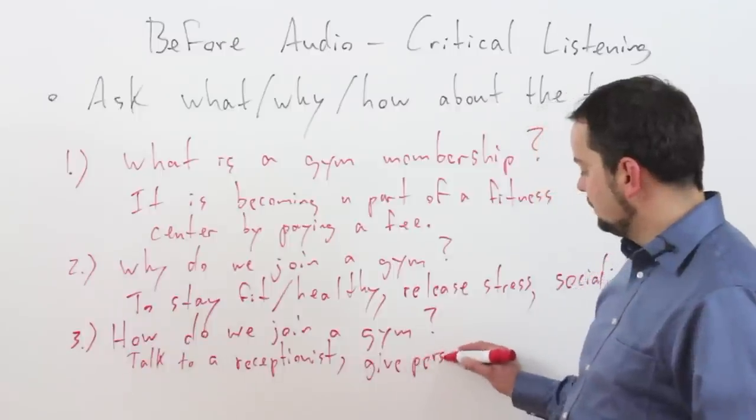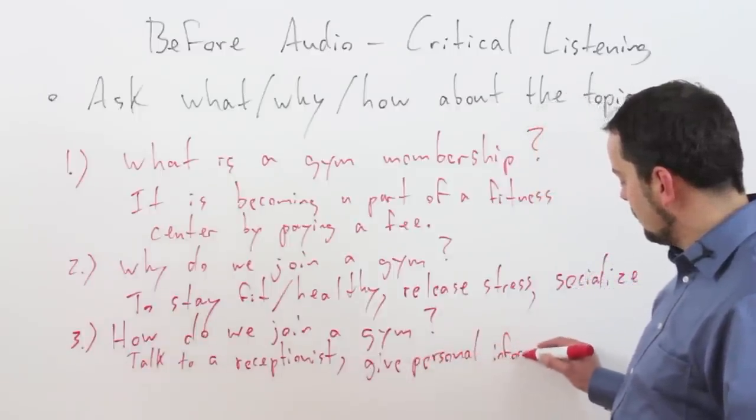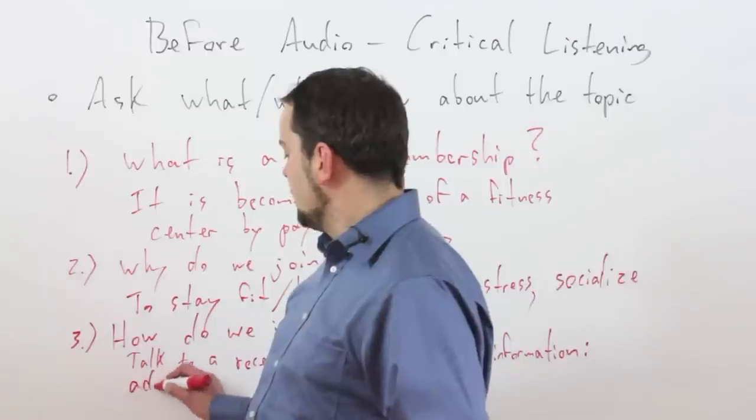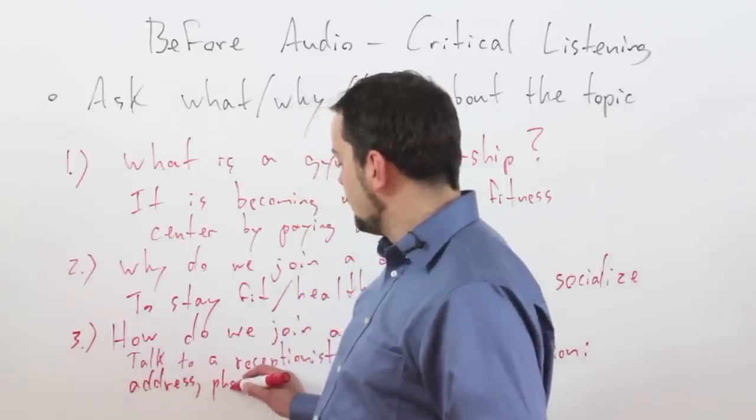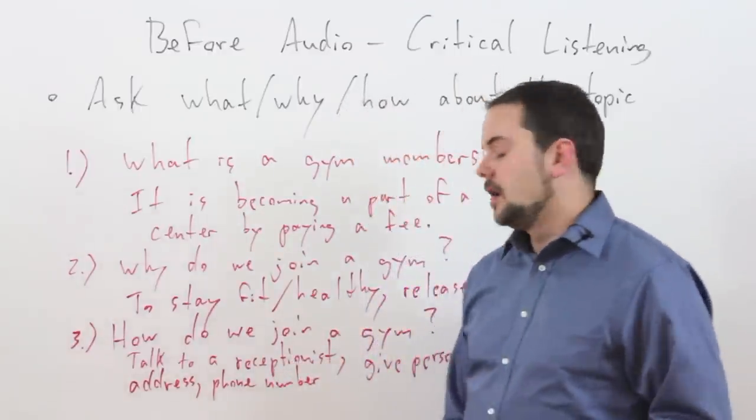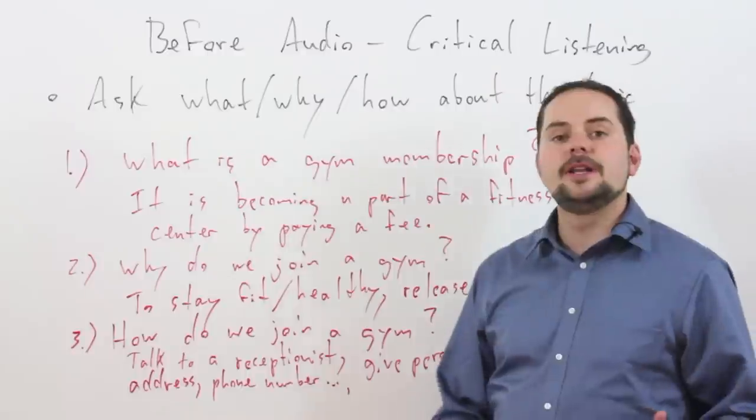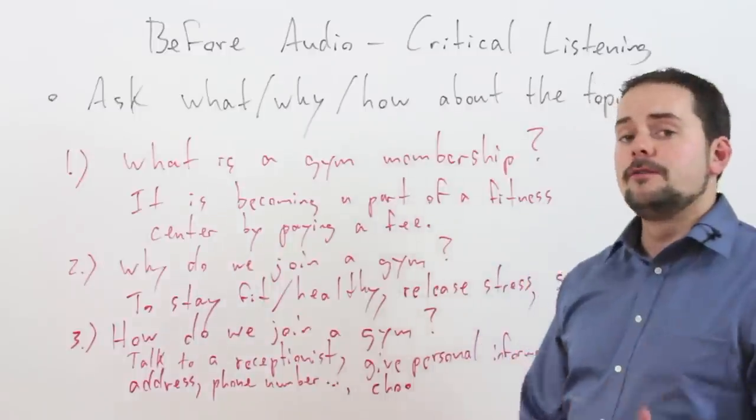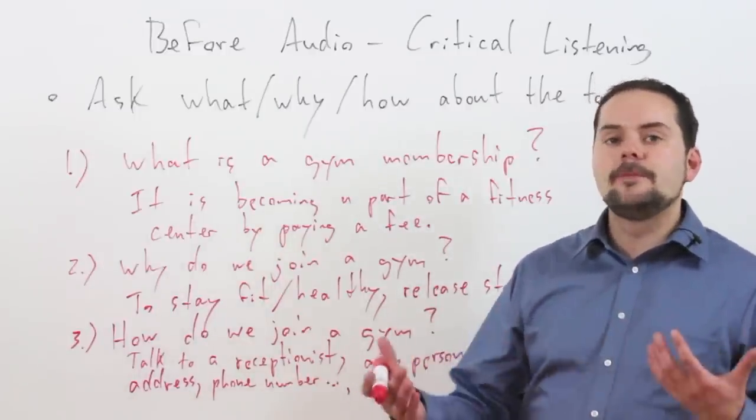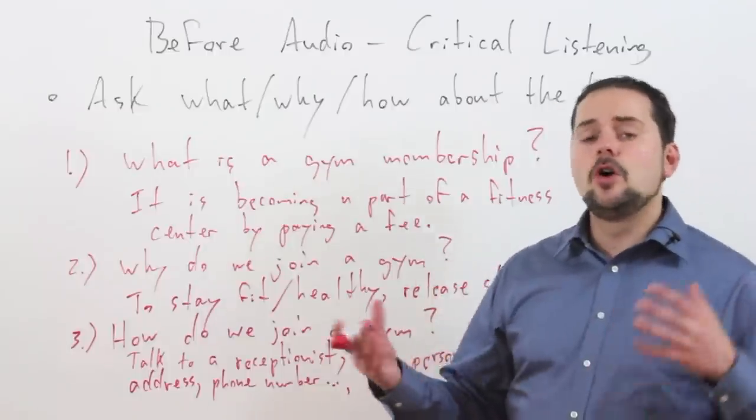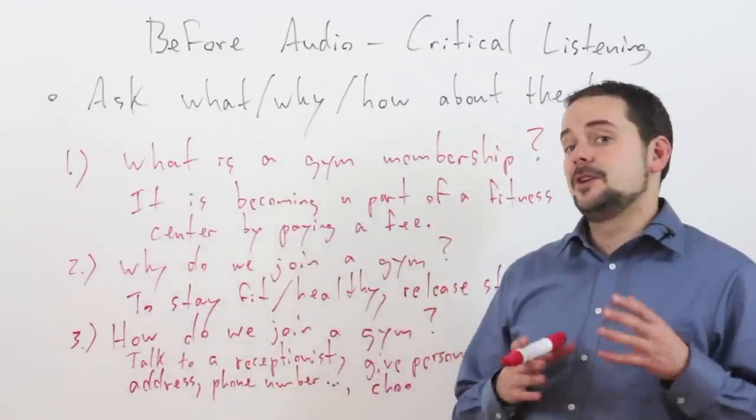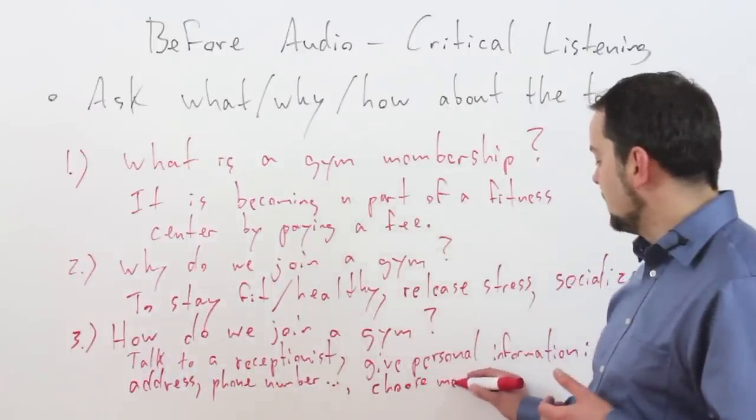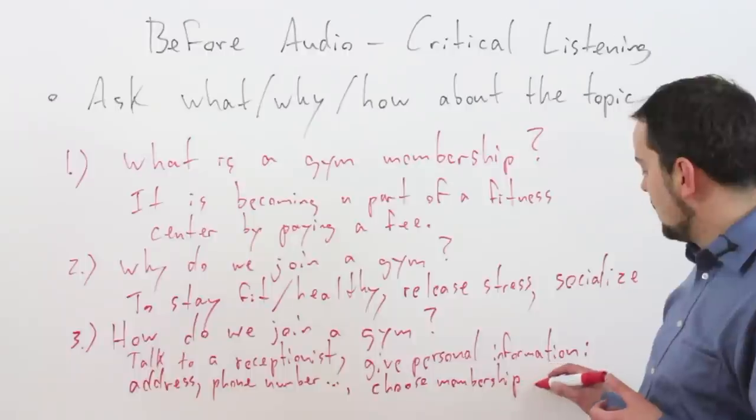Give personal information. What kind of personal information do we give? We give our address, phone number, and so on. Then we choose some kind of plan. We might choose to work out for one month in the beginning or half a year or a full year. Usually, the longer membership you buy, the cheaper it is. All of this information starts to come to our mind. Choose membership type and pay.